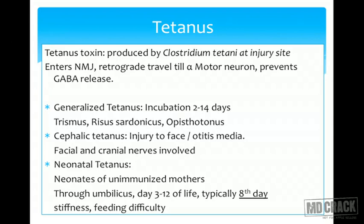There are three varieties of tetanus: generalized, cephalic, and neonatal. Generalized tetanus involves all skeletal muscles and sometimes smooth muscles. Incubation period is 2 to 14 days. Typical presentation includes trismus (tight masseter, locked jaw), risus sardonicus (smiling face from facial muscle contraction), and opisthotonos (bow-like body from paraspinal muscle spasm). Cephalic tetanus results from facial injury or chronic otitis media, with facial muscle involvement and cranial nerve palsies — very high mortality.